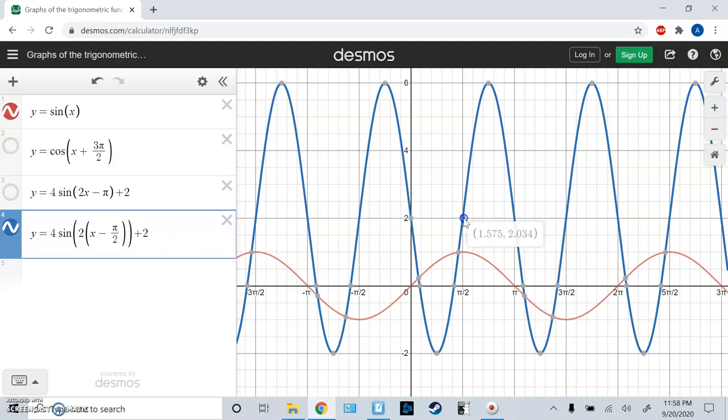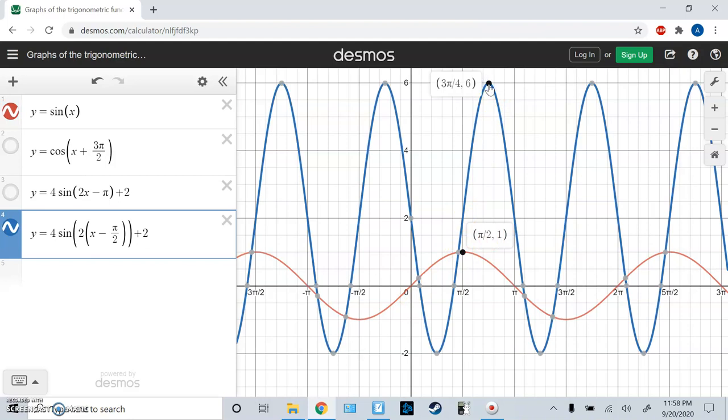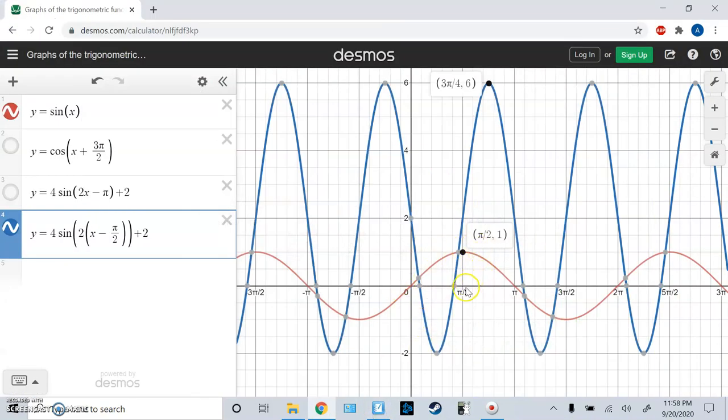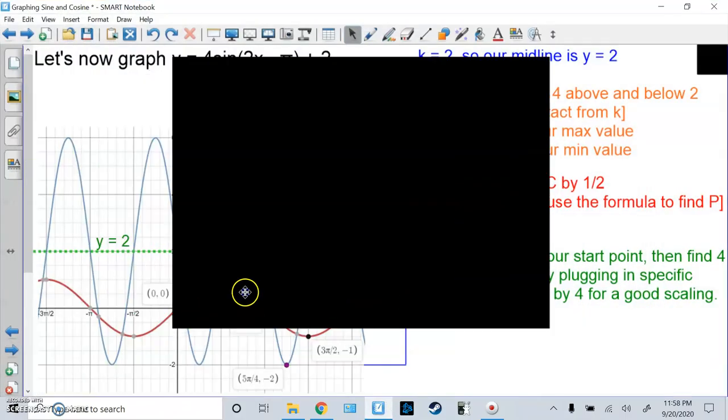But notice, from 2, it goes up to the highest point, which in this case was 1 for the original. But this goes up to the highest point, in this case, 6. Also, this is 3 pi over 4. Notice, if you do pi divided by 4, that's our scaling. Pi over 2 plus pi over 4 is 3 pi over 4. And you'll find all the nice points this way. You'll find the highest, lowest, and the middle point if you follow that formula.